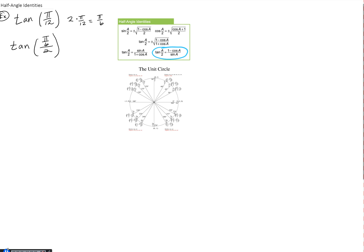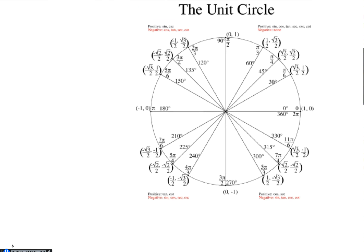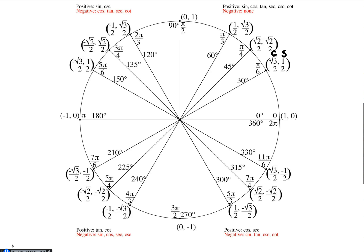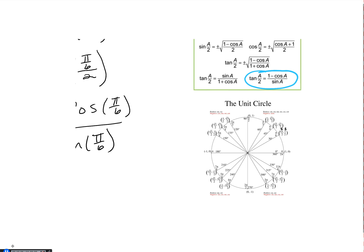We're going to write this as: 1 minus cosine of a, which is π/6, all divided by the sine of π/6. This is really nice because all we have to do is look up cosine and sine of π/6 and plug them in. At π/6, cosine is √3/2 and sine is 1/2.